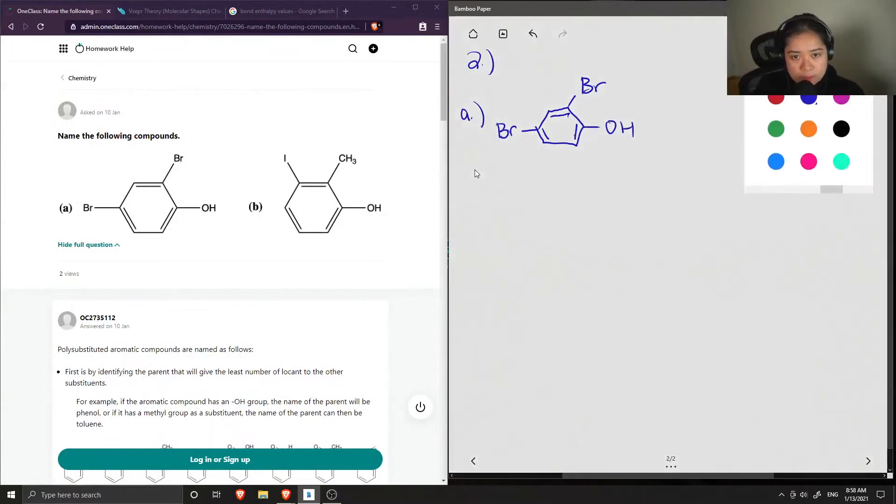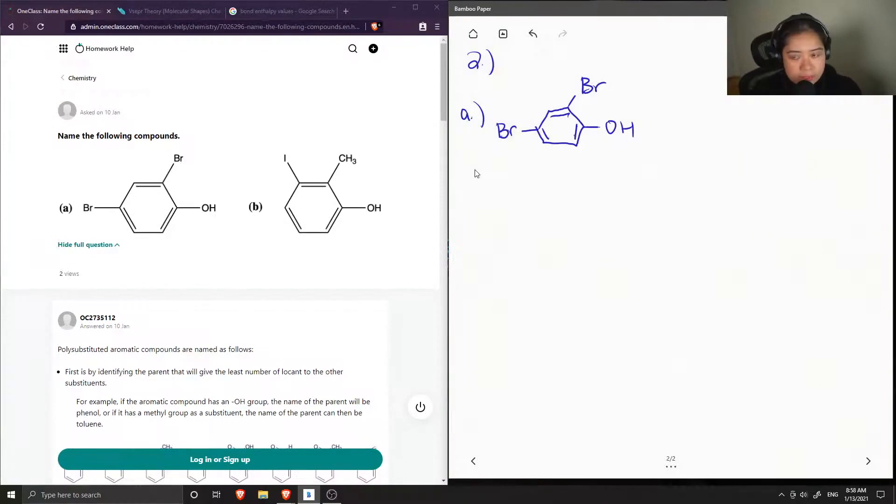And before we start naming, we want to number all the carbons in the ring. And we want to make sure that we have the lowest number possible at the end. And that our most important group, so in this case, it is the alcohol group. So we want to make sure that this group is on carbon 1.